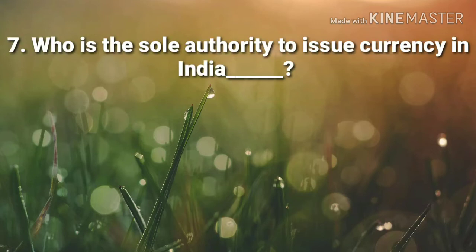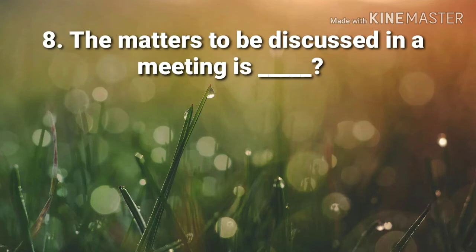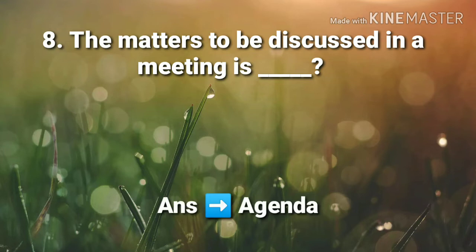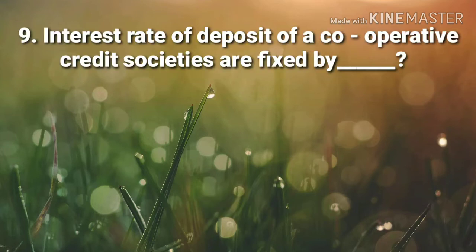7th question: Who is the sole authority to issue currency in India? Answer: RBI. 8th question: The matters to be discussed in a meeting is — Answer: Agenda.